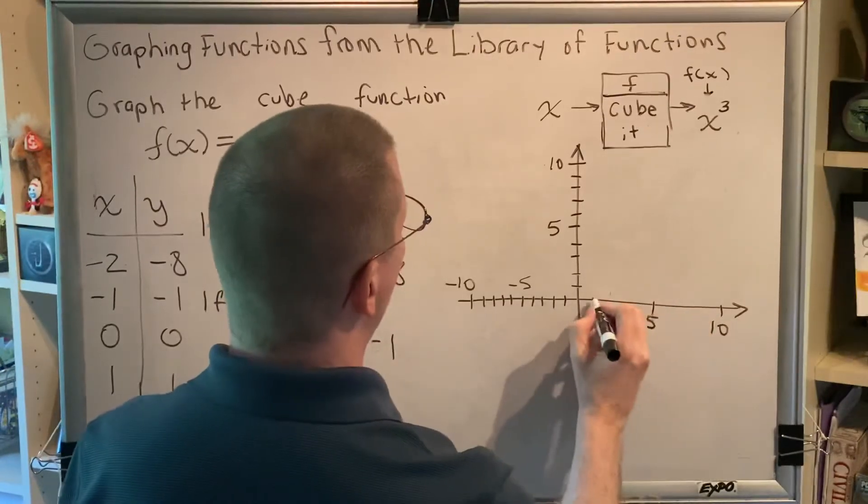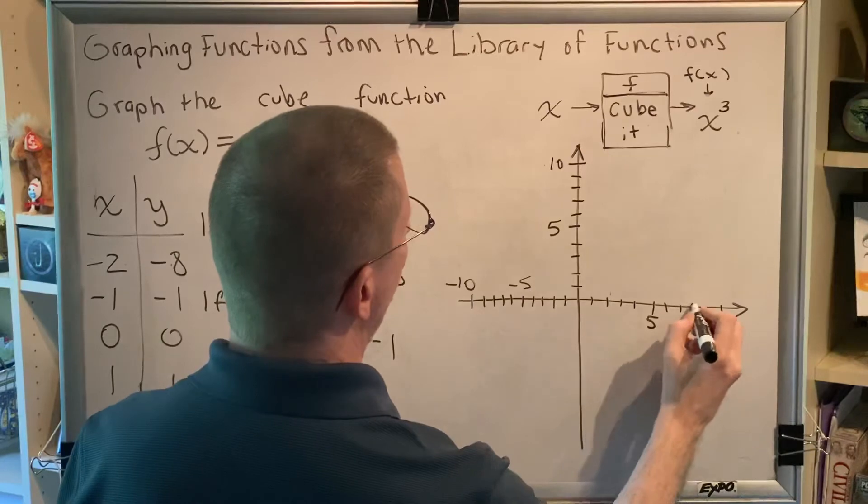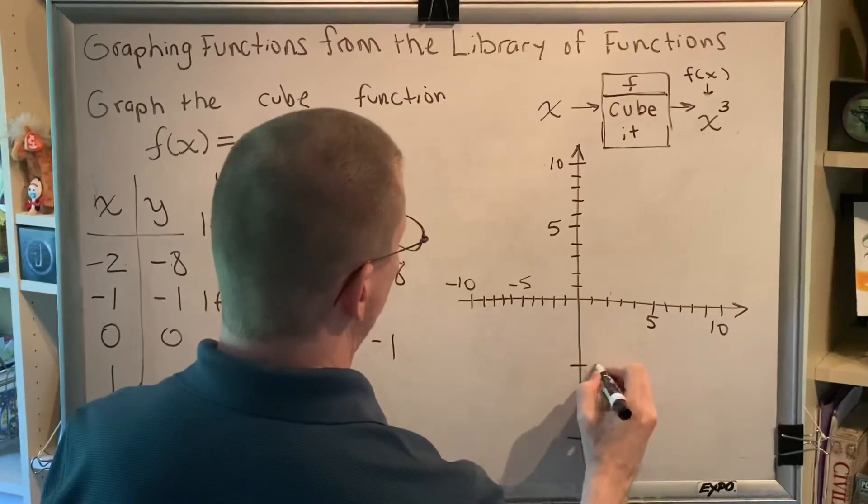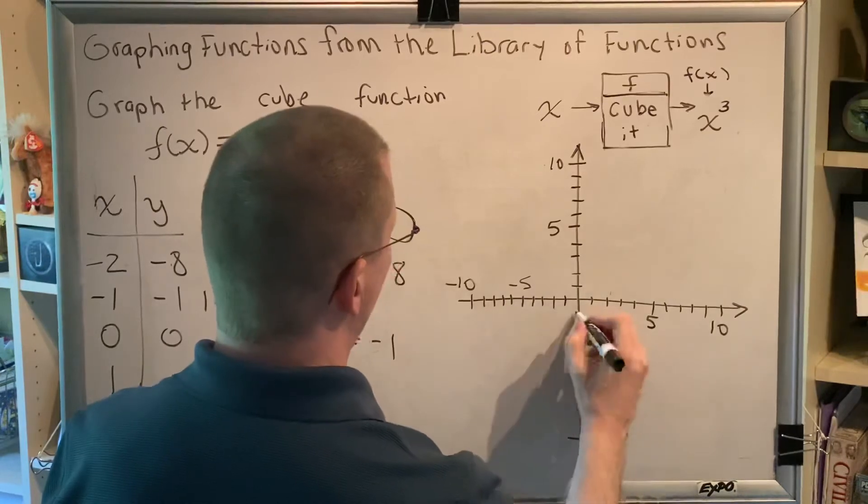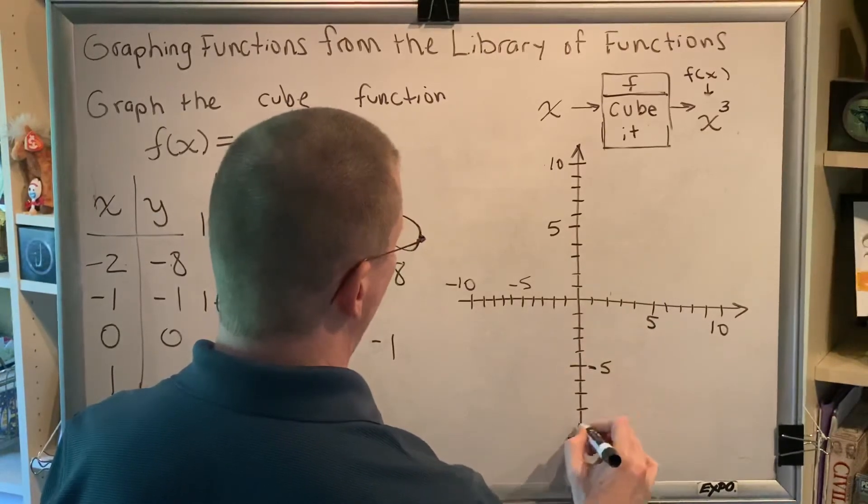This is 10 out here, this is 5 over here, which makes this 1, 2, 3, and 4, 6, 7, 8, and 9. This is negative 10 down here, this is negative 5, so we get negative 1, negative 2, negative 3, negative 4, negative 6, negative 7, negative 8, negative 9.